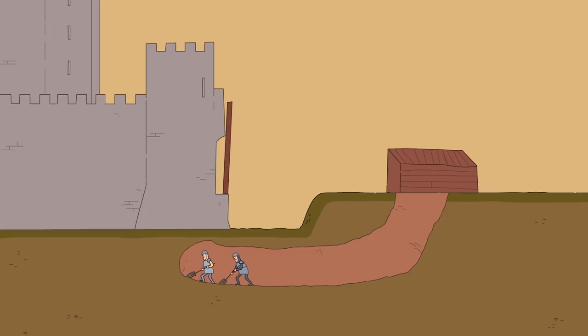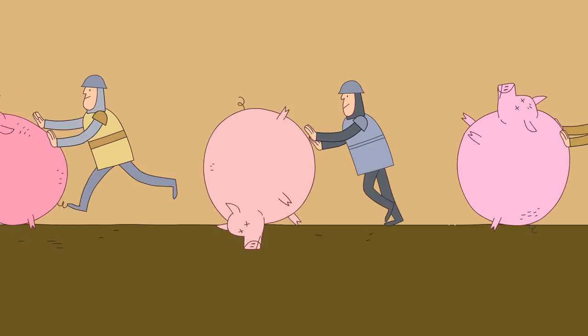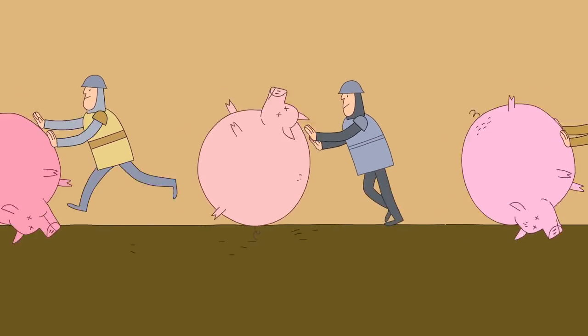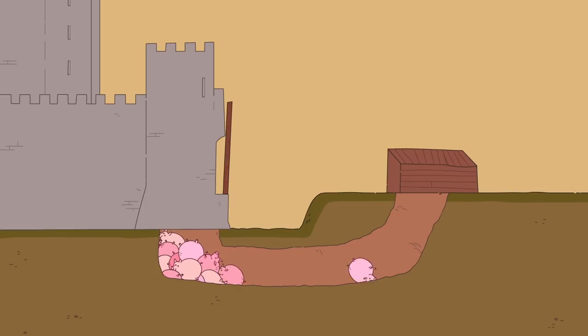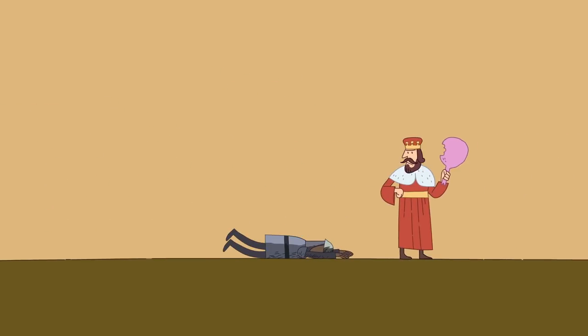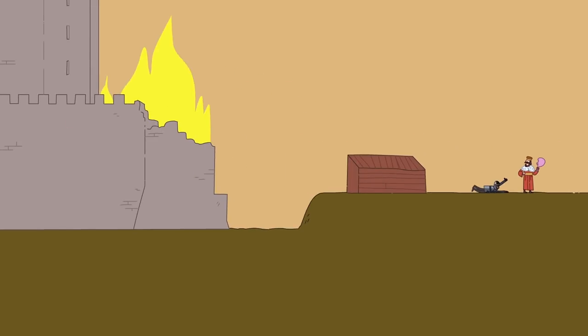Attackers would dig a tunnel underground up to the castle walls, causing them to crumble and collapse. At the Siege of Rochester in 1215, King John found a cunning, albeit cruel, way of doing this. By burning the fat from 40 pigs, which one source claims were too fat to eat, his men brought down the entire south-east corner of the keep.